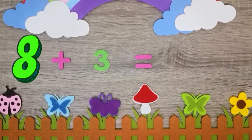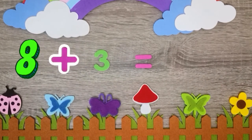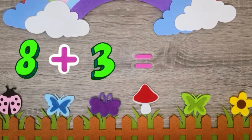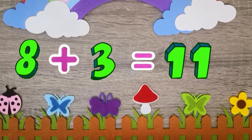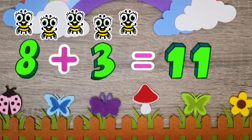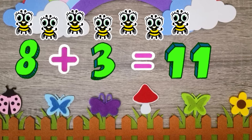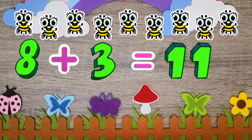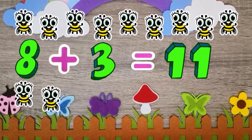8 plus 3 equals 11. 1, 2, 3, 4, 5, 6, 7, 8, 9, 10, 11.